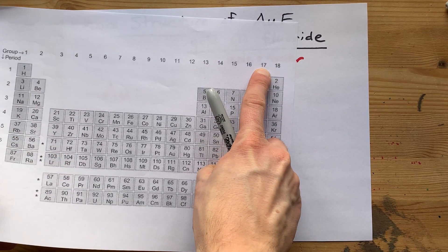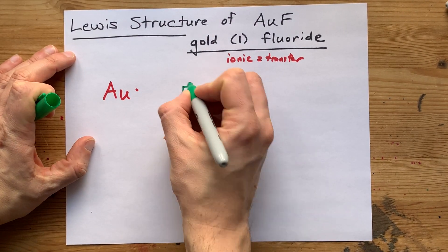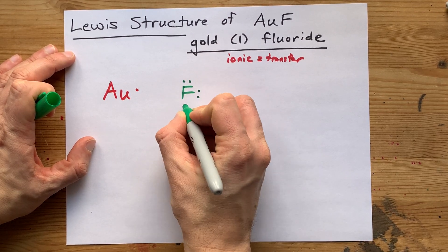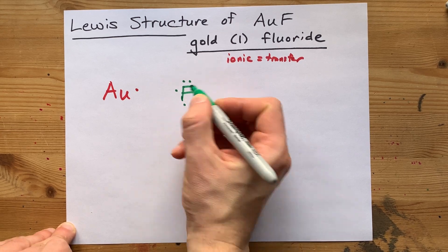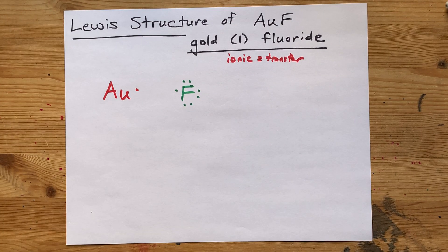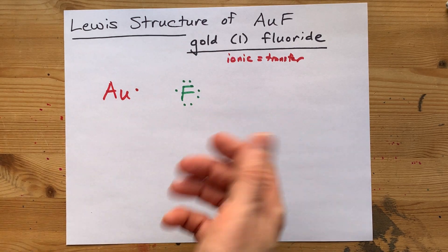Fluorine, in group 17, brings seven valence electrons with it. That's one, two, three, four, five, six, seven. And non-metals like fluorine always want a complete octet or a full eight electrons in its outer shell. So what happens?